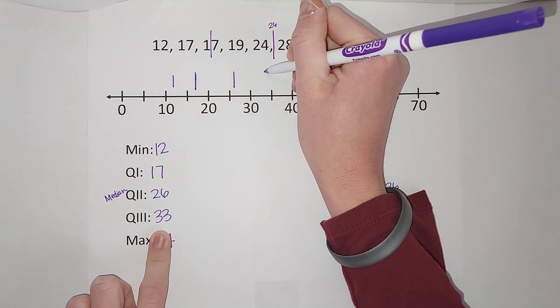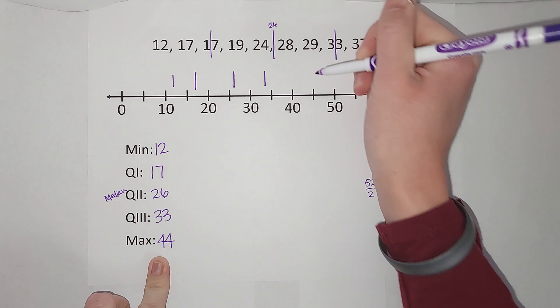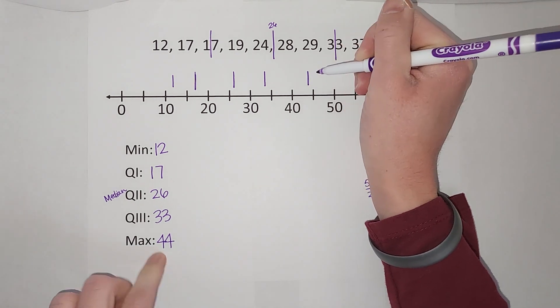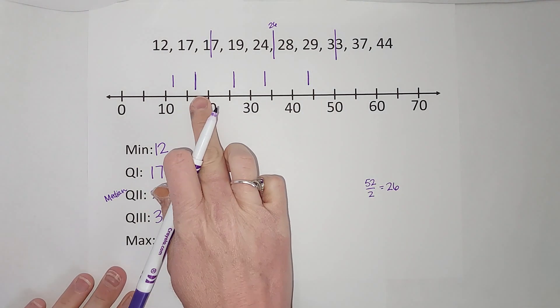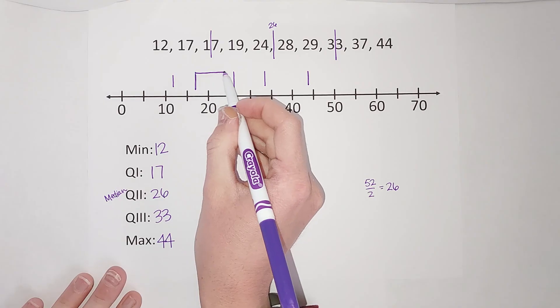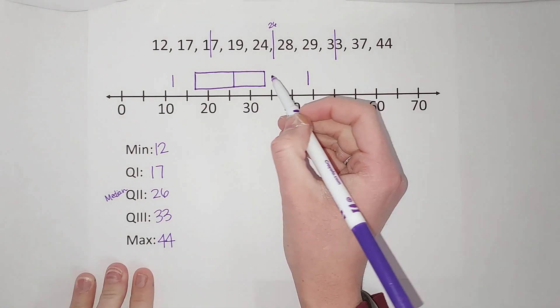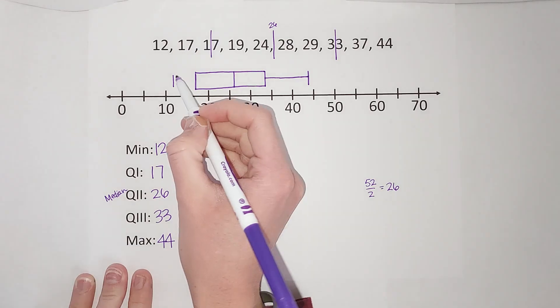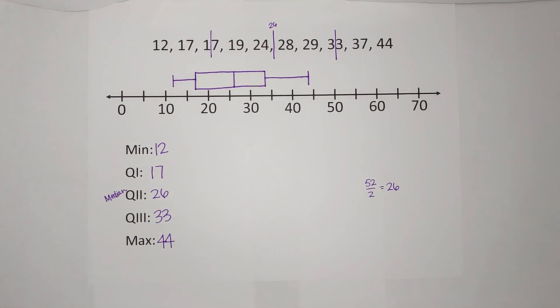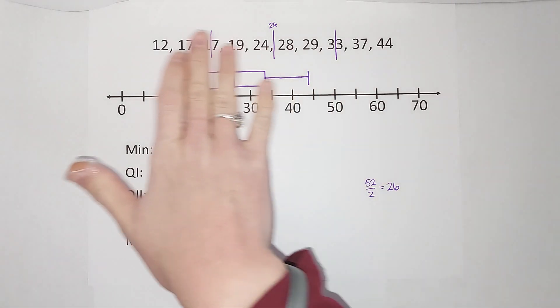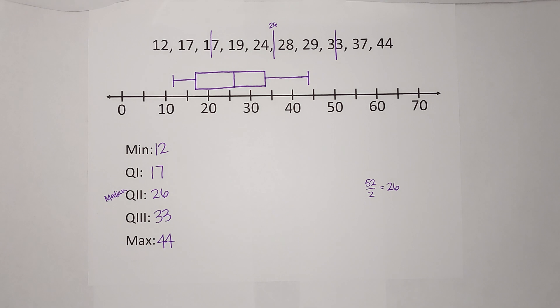And my max is 44, so about there. Then my three in the middle I'm going to make into my box, and then those reach out with the whiskers to my maximum and my minimum, and it should look a little something like that. I'm going to link a playlist again. If you need one with outliers, that'll be in the playlist, or if you need another example where the numbers are set up a little bit differently, go ahead and check that out. I hope that made sense, thanks bye.